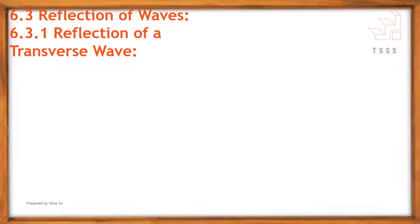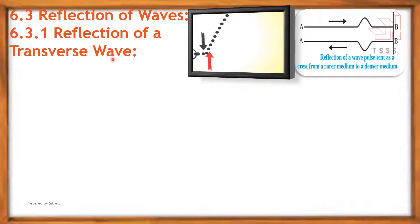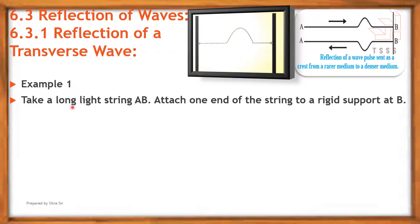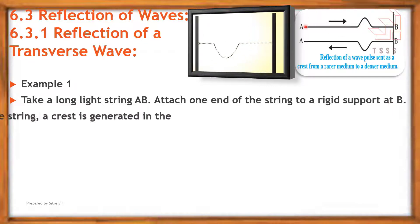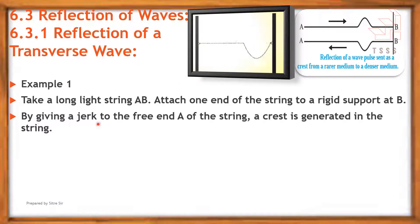The next point is reflection of waves. First: reflection of a transverse wave from a denser medium. Consider Example 1: take a long, light string AB and attach one end of the string to a rigid support at B. By giving a jerk to the free end A of the string, a crest is generated in the string.